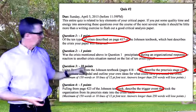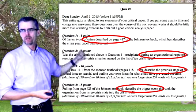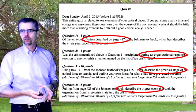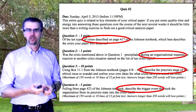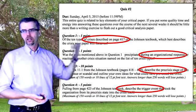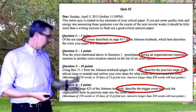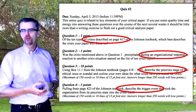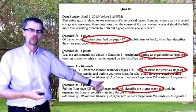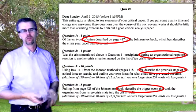Question number three, worth ten points: using box 11.1 from the Johnson textbook on pages 418–419, describe the pre-crisis stage of this ethical issue or scandal, and outline your own ideas for what could have prevented this crisis. Maximum 150 words or ten lines of 12-point font text; answers longer than 250 words will lose points. Question number four, pulling from page 423: describe the trigger event that took the organization from its pre-crisis state into the crisis itself — again, a 150-word answer. There is no question on this quiz that will require more than 150 to 250 words.